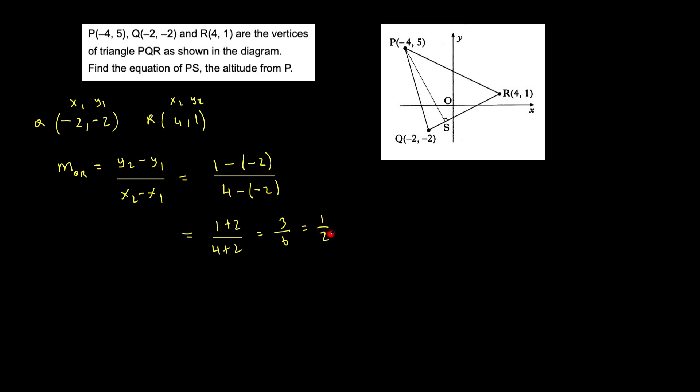That simplifies down to 1 over 2. So the gradient of QR is a half. Now the gradient of PS of course would be minus 2. Why?